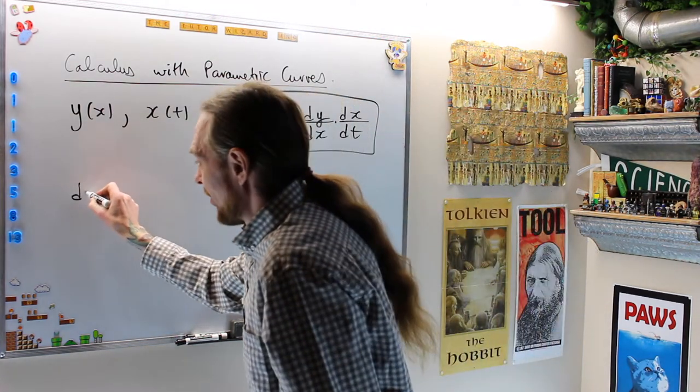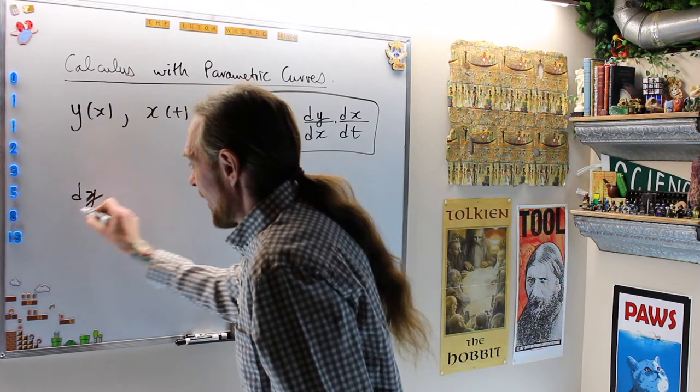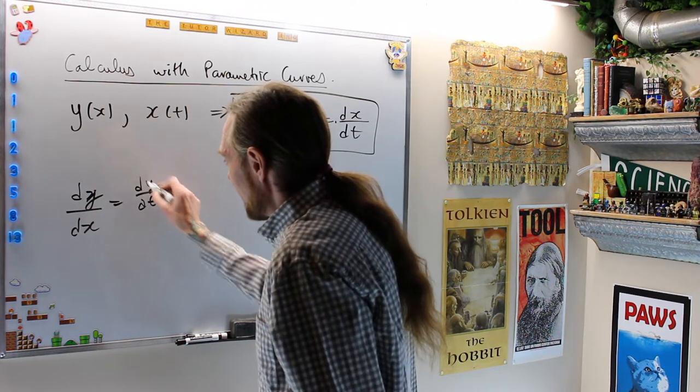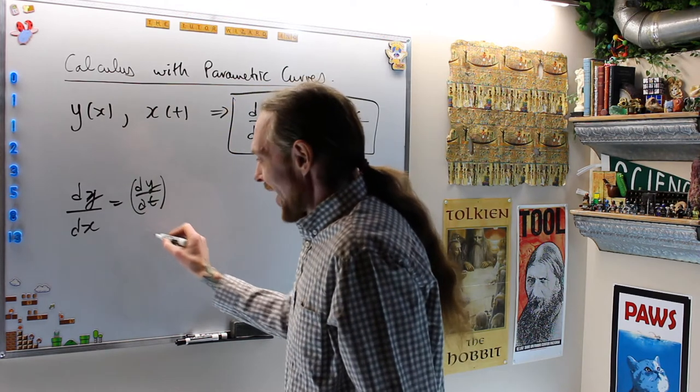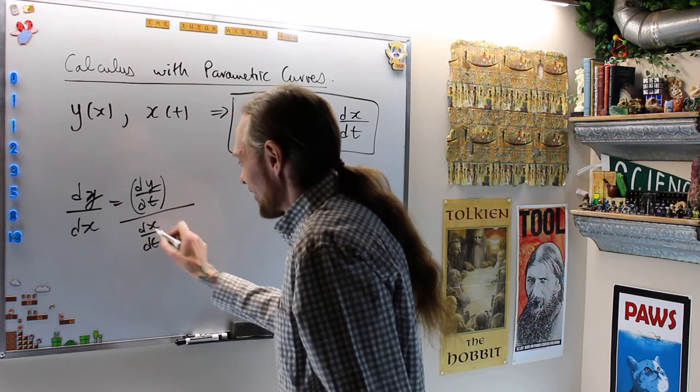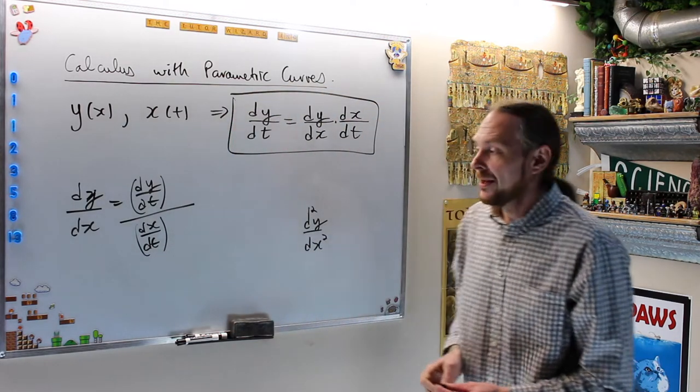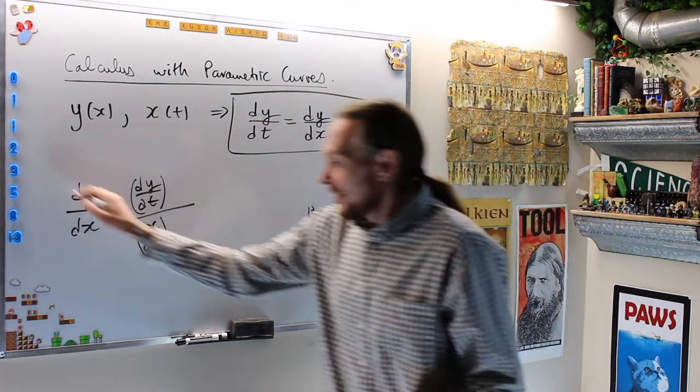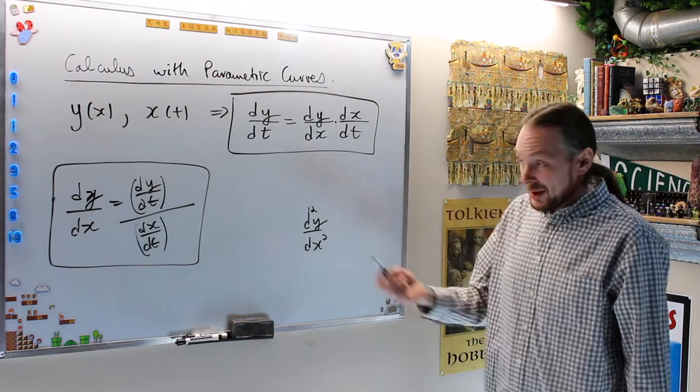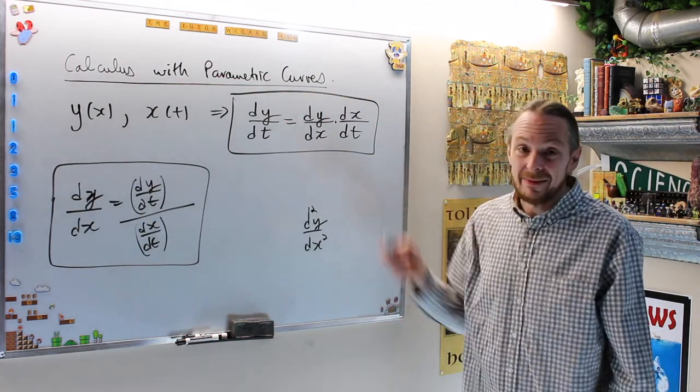Now I just solve for the one I want. This says in parametric form, dy/dx is equal to dy/dt, which isn't a fraction, over dx/dt, not a fraction. That's the first derivative in parametric form, which they give in the book and the notes, but they're getting it from the chain rule.